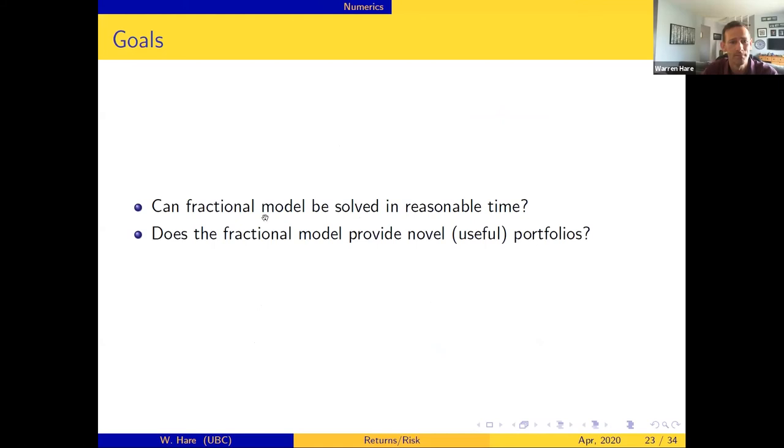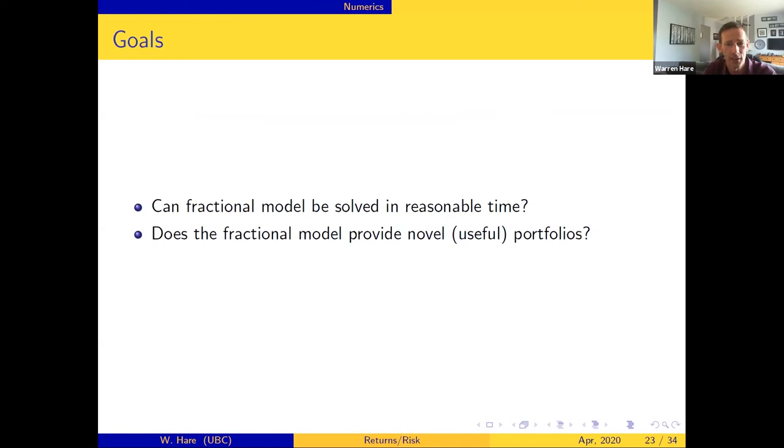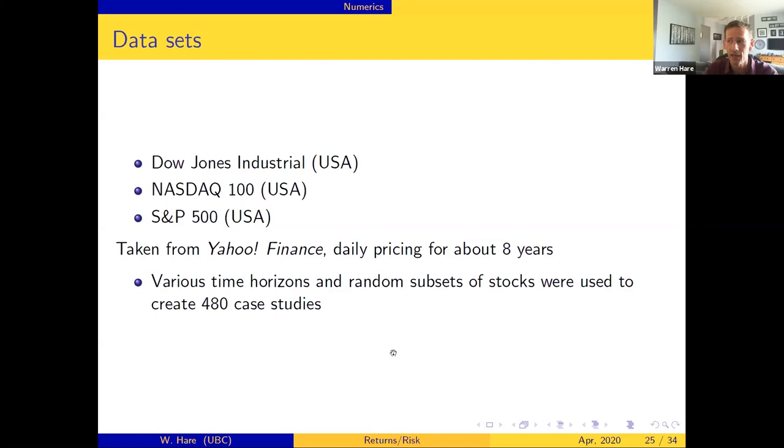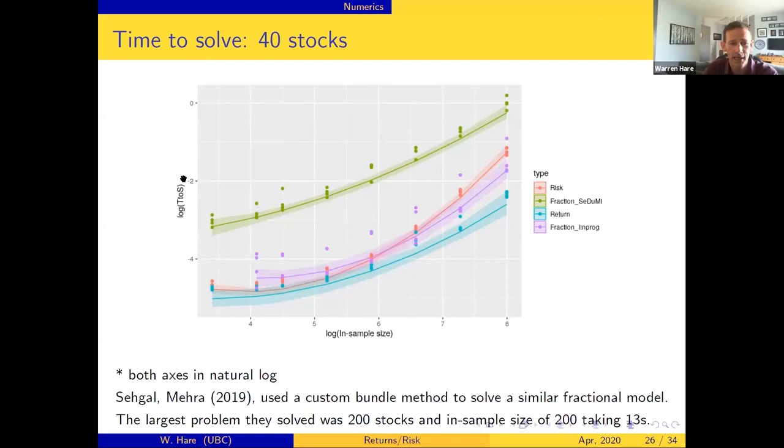Okay I'm just going to end with a quick case study. The case study - we built a lot of problems and we wanted to answer two questions. First is we had to introduce a bunch of new variables to change this to a linear program - can we still solve it in a reasonable time? You know linear programs are fast but if the number of variables get big enough they become slow. And the second is, is this even doing anything or are we just resolving the same thing in a different way? So here's our setup - we did a returns oriented model, a risk oriented model, and our returns over risk model. We solved it with a simplex method and with an interior point method. We used stock market pricing from the Dow Jones, the NASDAQs, and the S&P 500 for about eight years worth of data, and using various time horizons and various subsets of stocks we made about 480 case studies, so we have quite a few test problems to play with.